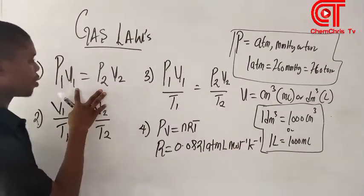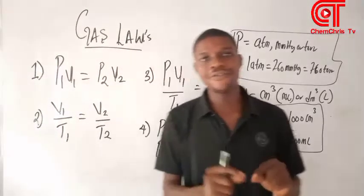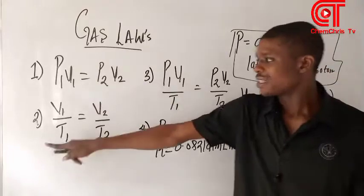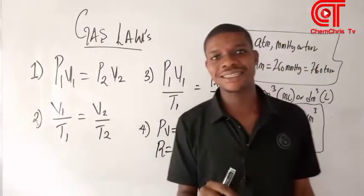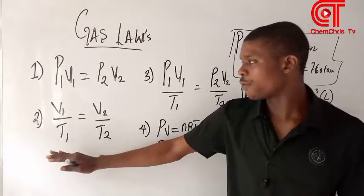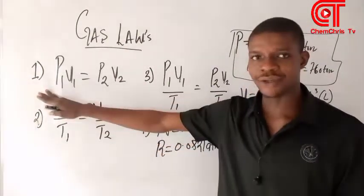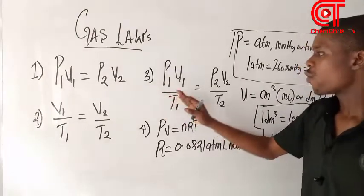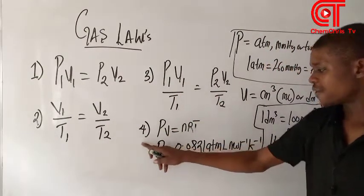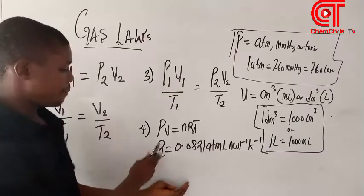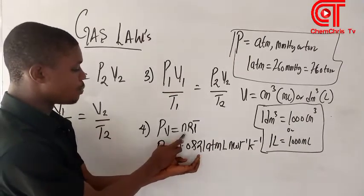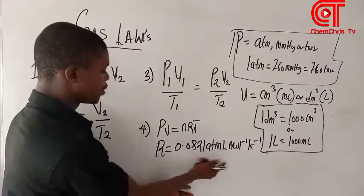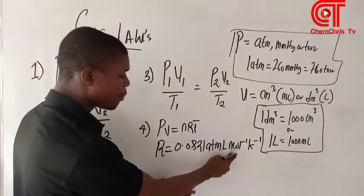Let's look at each formula. The first one is Boyle's Law, which states that the volume of a fixed mass of gas is inversely proportional to its pressure, provided temperature is kept constant. We also have the combined gas equation — that's where you combine both Boyle's Law and Charles' Law. Then there is the ideal gas equation: PV = nRT, where P is pressure, V is volume, n is the number of moles, R is the gas constant (0.082 L·atm per mol per Kelvin), and T is temperature.